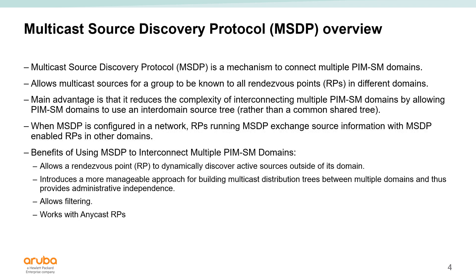We also support Multicast Source Discovery Protocol, which was designed as a mechanism to connect multiple different PIM sparse mode domains. The rendezvous points within PIM sparse mode domains contain all the multicast source access information. MSDP allows those rendezvous points within different PIM sparse mode domains to share that information, making it easy to configure multicast traffic that crosses PIM domains. Filtering is available so we don't have to share all source address information.